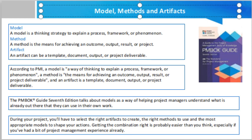A model describes a thinking strategy to explain a process or framework of phenomena. A method is the means for achieving an outcome, result, or project deliverable. An artifact is a template, document, output, or project deliverable. Sample models include process groups, ADKAR, situational leadership, Cynefin framework, and Maslow's theory of needs. Sample methods include probability and impact matrix, lessons learned, project closeout, story point estimation, net promoter score, and wideband Delphi. Sample artifacts include project charter, risk register, stakeholder engagement plan, prioritization matrix, user story, and value stream map.